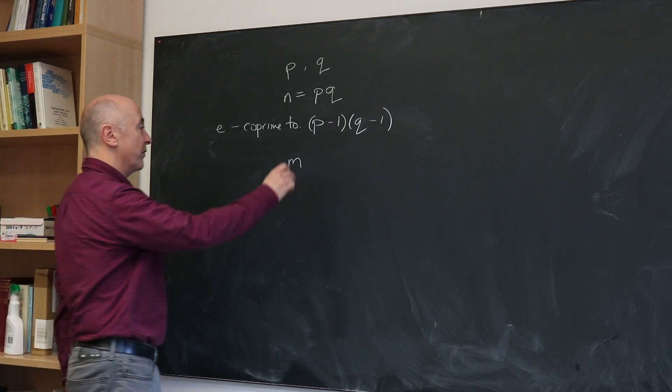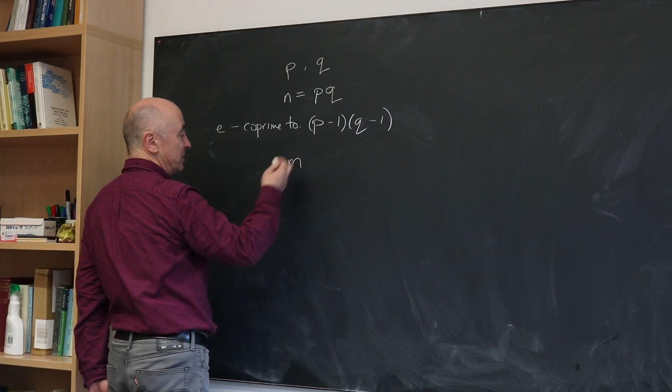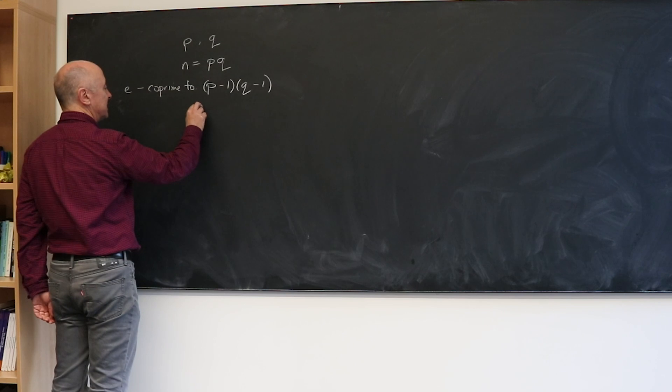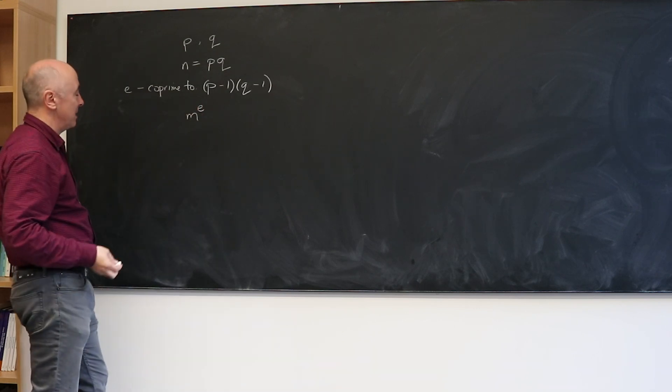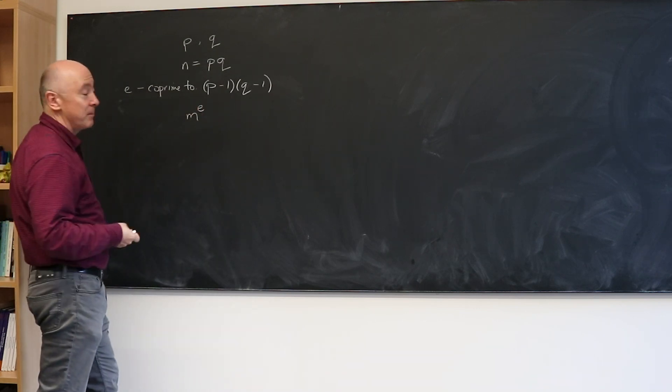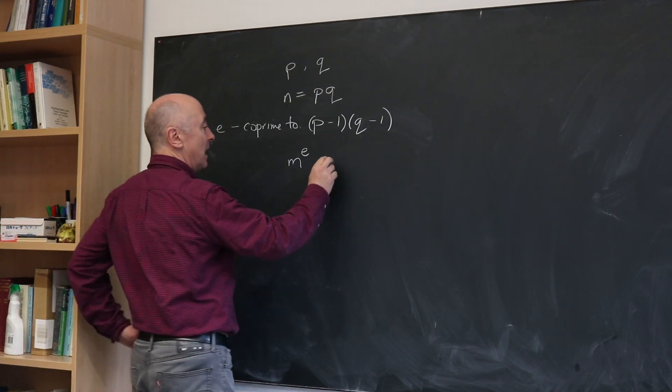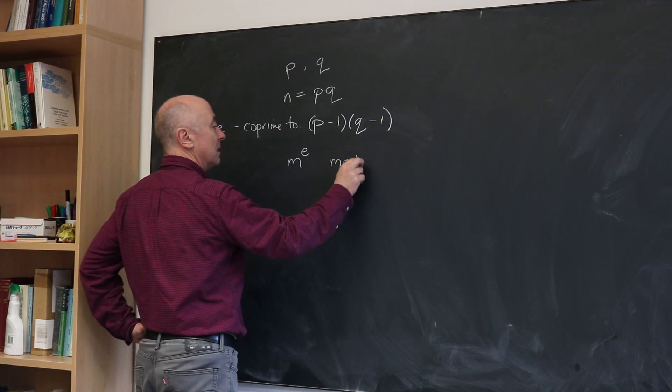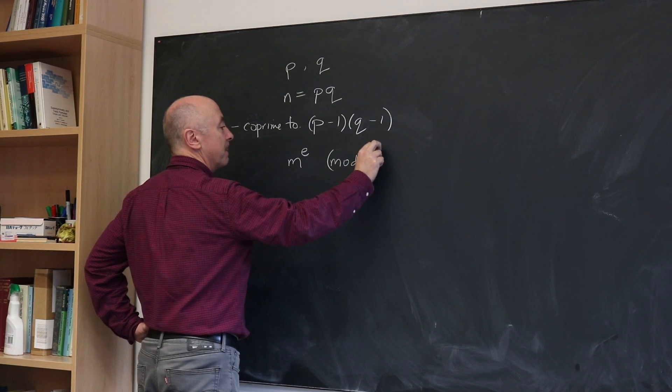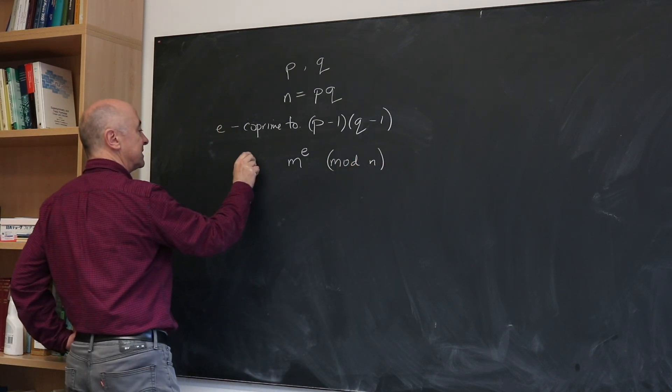What you do is quite simple: you form M, the message you want to send, you raise it to the power E, so you multiply it by itself E times, and then you do your arithmetic modulo N.